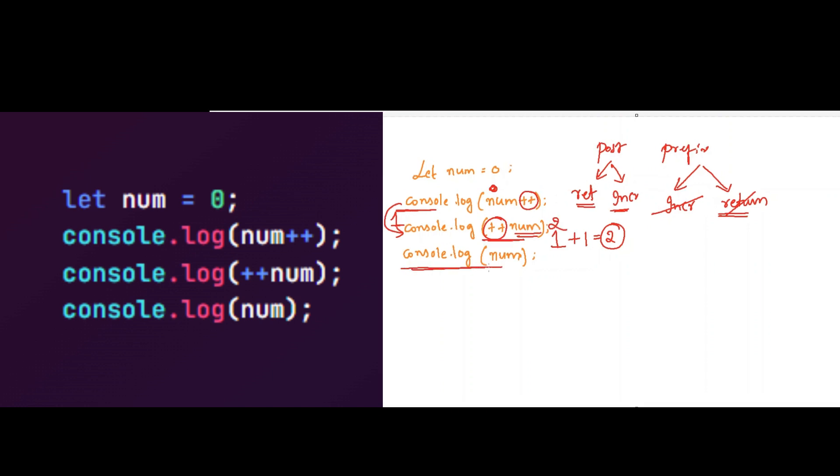After the third line, the current value of num is 2. So it will log 0, 2, and 2 into the console.